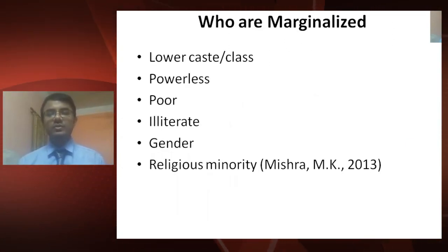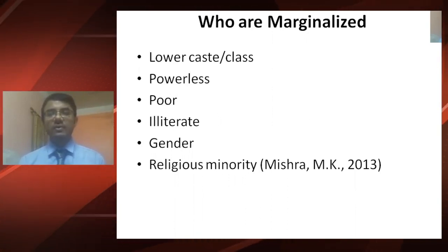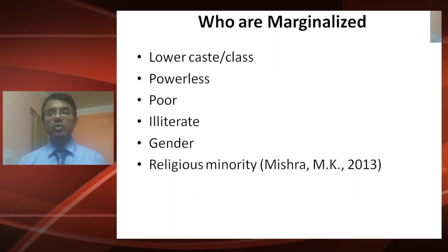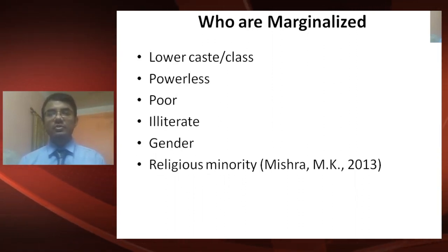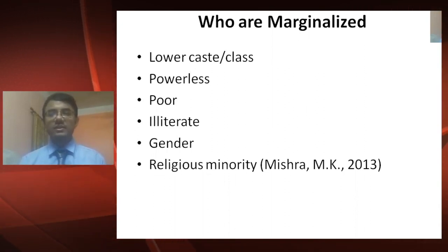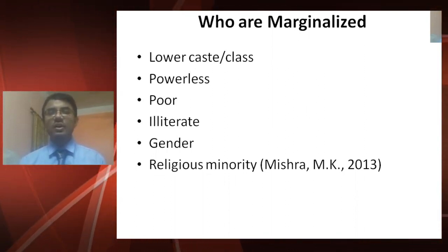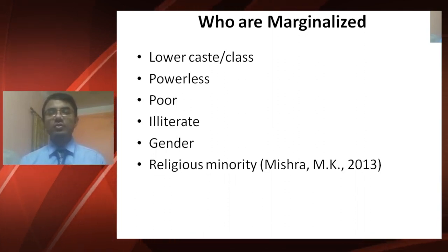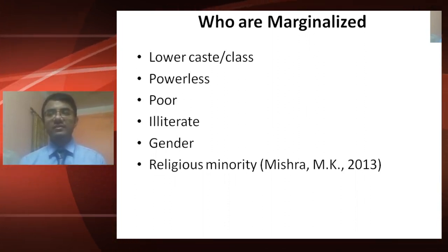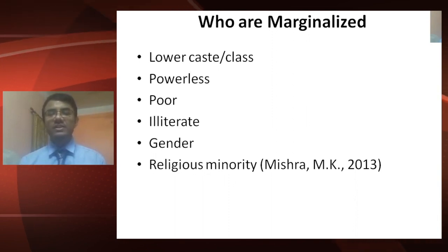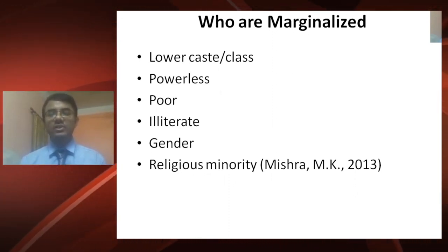Coming to the definition of who are marginalized: the first one is lower caste or class, second is who are powerless, third is who are poor, fourth is who are illiterate, the next is gender bias, and the last one is religious minority.